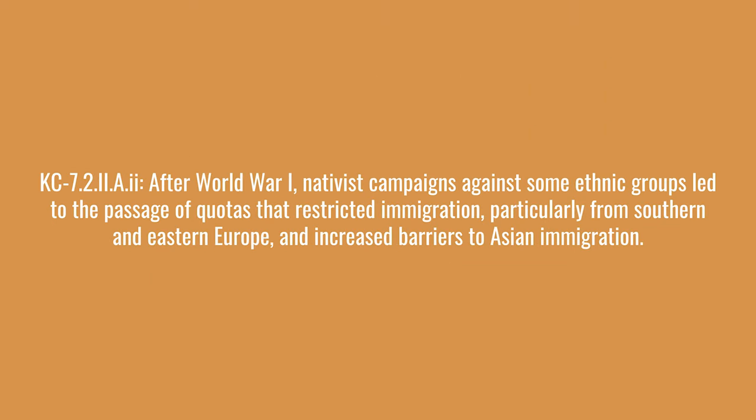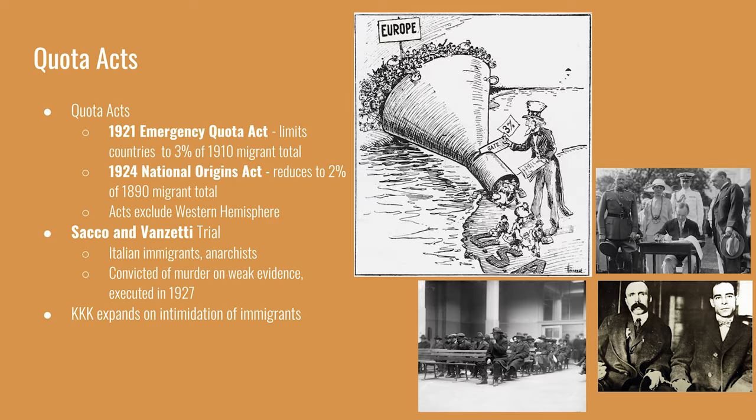After World War I, nativist campaigns against some ethnic groups led to the passage of quotas that restricted immigration, particularly from southern and eastern Europe, and increased barriers to Asian immigration. Nativism was fueled by anti-German sentiment, which then erupted further into the Red Scare. It was a continuation of previous nativism that came from the second wave of immigration. Some of it was also fueled by social Darwinist ideas.